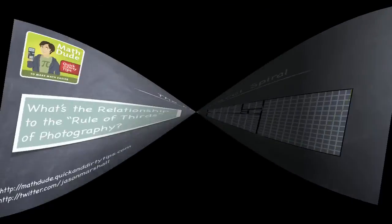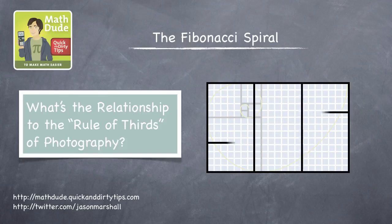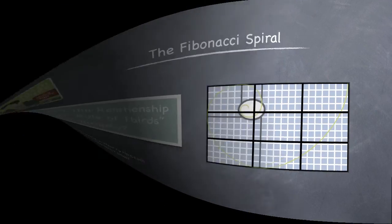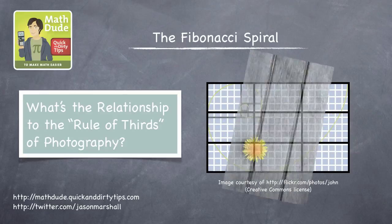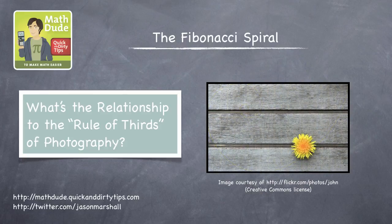But how does that relate to the rule of thirds in photography? Well, let's take our spiral and divide the image into thirds, both vertically and horizontally. Notice that the intersection of the two lines in the top left is pretty close to the eye of the golden spiral. Here's an example with a picture of a flower — most people would find this composition to be pretty nice. There's something appealing about it, and it turns out the flower is positioned right at the eye of the golden spiral.